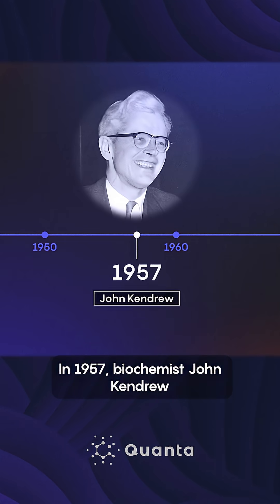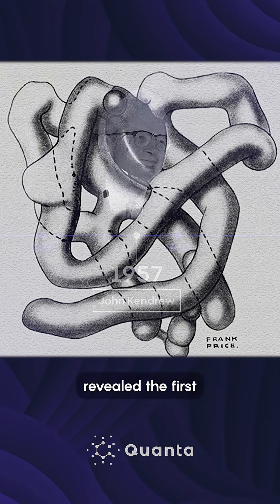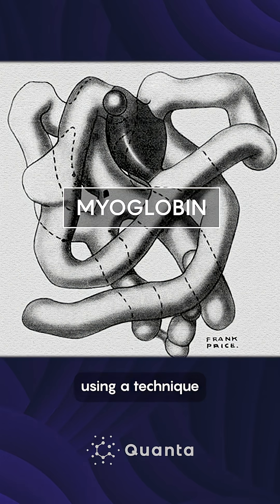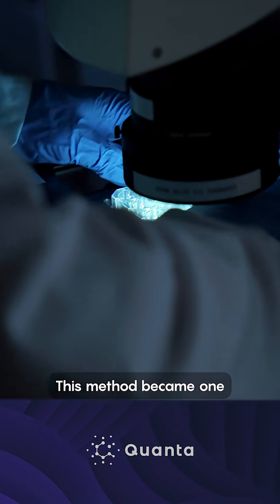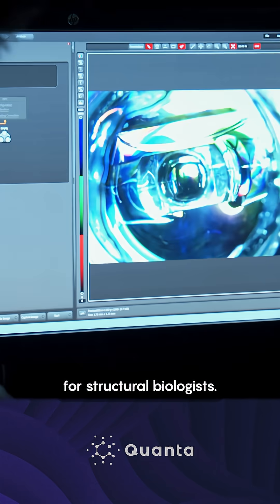In 1957, biochemist John Kendrew revealed the first atomic protein structure using a technique called X-ray crystallography. This method became one of the most important tools for structural biologists.